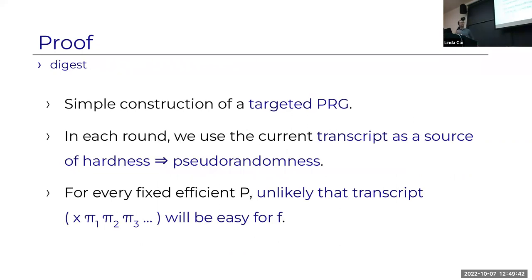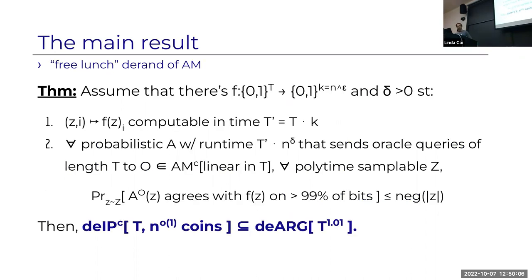So the assumption we need about F: it's easy to compute each bit of F, but hard to print the entire string F(Z) with high probability when Z is sampled from any polynomial-time samplable distribution. This shrinks the number of random coins and allows us to collapse the protocol—the rest is standard. The formal result: if F is easy bit-by-bit but hard to print in entirety over every polynomial-time samplable distribution, then you can derandomize interactive proofs without paying for the number of rounds, producing NP-type argument systems.